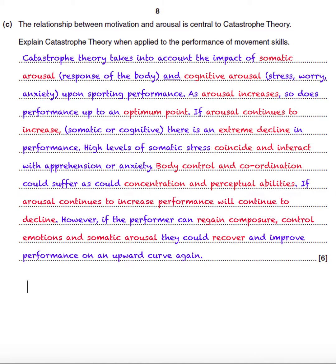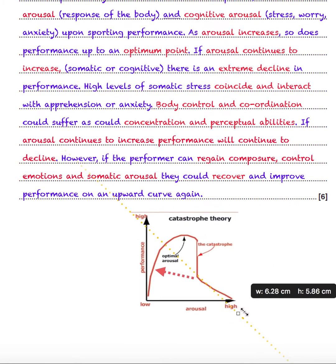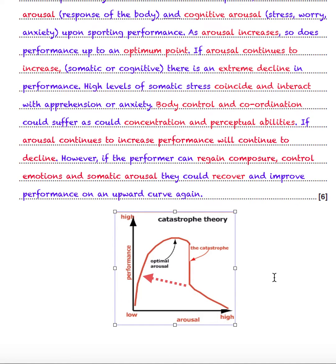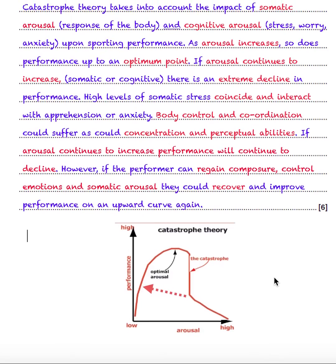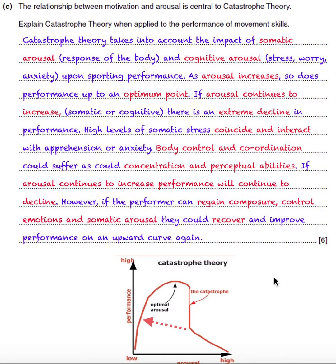On occasions, although it is a little bit risky, you can include a diagram, providing that you label it clearly — both the axes and the key points within the diagram as shown here. Don't just put a pencil diagram up in a corner and hope it will get you some marks, because it certainly won't. Much better, in terms of risk, to actually write your answer out in full in continuous prose, as shown here.